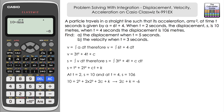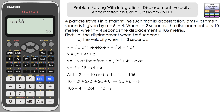At present this equation has two unknowns. We can use the second value of t and displacement to form a pair of simultaneous equations. At t = 4 seconds, s = 106: 106 = 4³ + 2(4²) + 4c + k. Simplifying, 4³ + 2(4²) = 96, and 106 - 96 = 10, so more simply we know that 4c + k = 10.